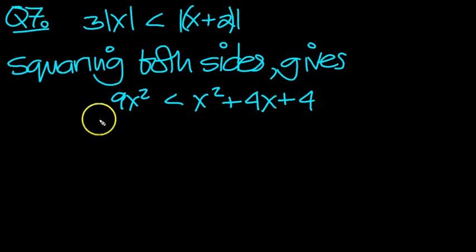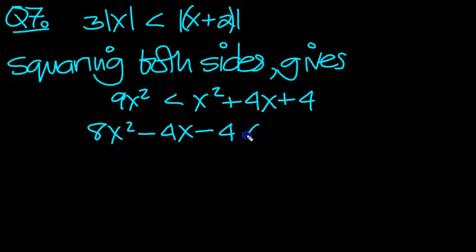Move all this over to be with the 9x squared. Move the x squared over, it becomes 8x squared. Move the 4x over minus 4x, and then lastly move the 4 over, it's less than 0.